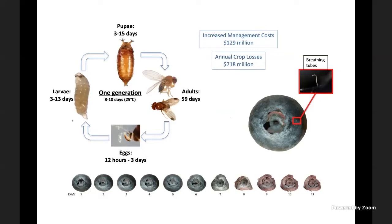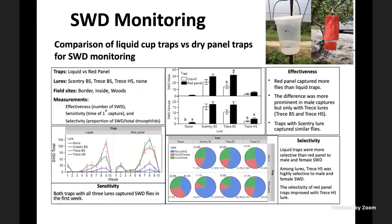For monitoring SWD, we initially used 32-ounce plastic cups baited with a yeast-sugar slurry, which becomes messy and stinky after a week. Recently, several states participated in studies to develop dry traps: a red sticky card baited with commercially available lures. These provided comparable results and are now the recommended monitoring approach for spotted wing drosophila.